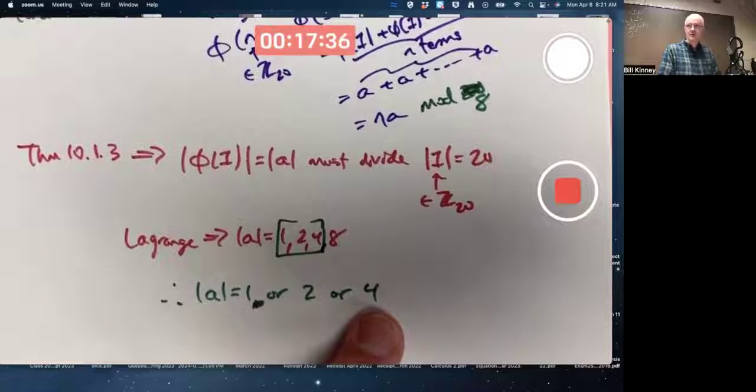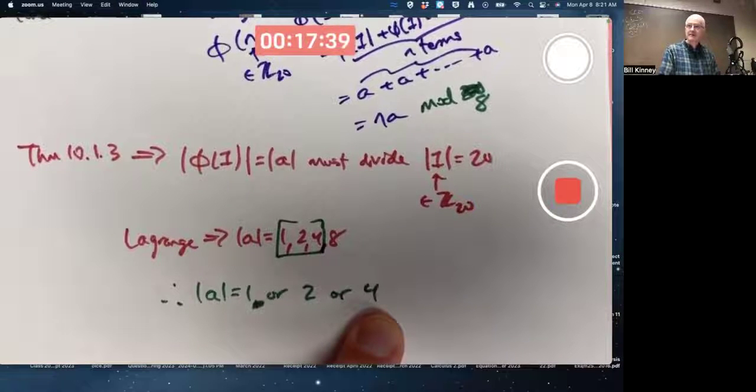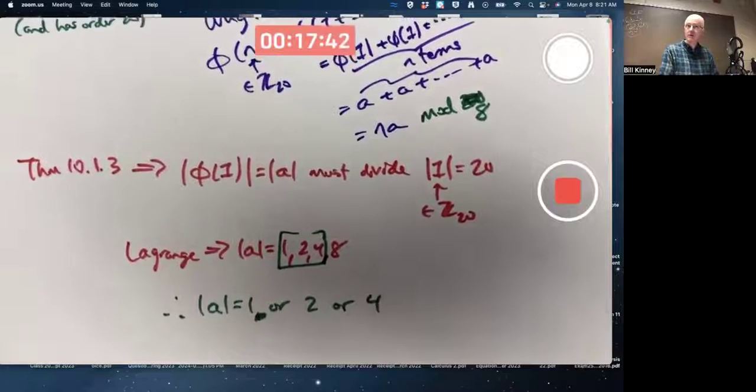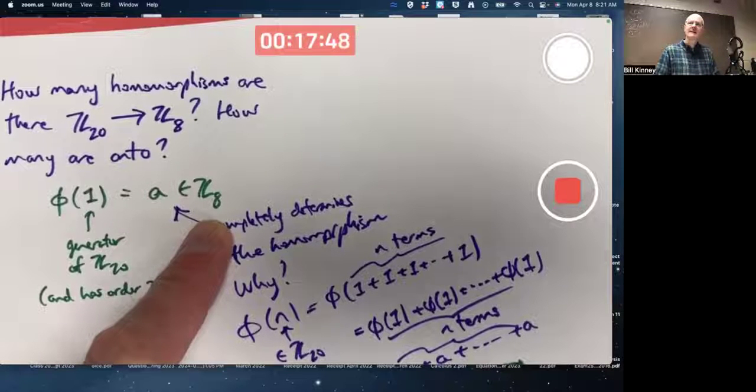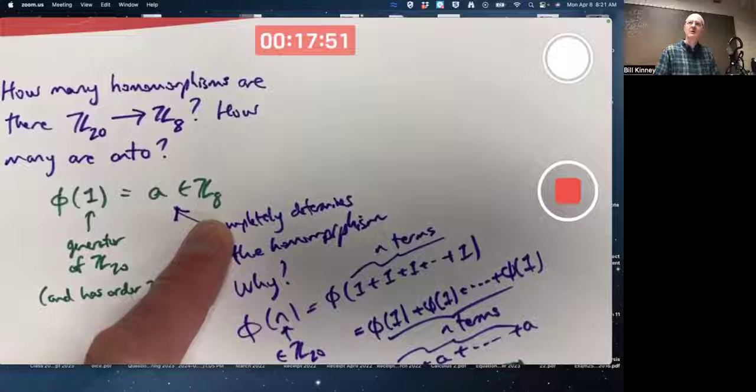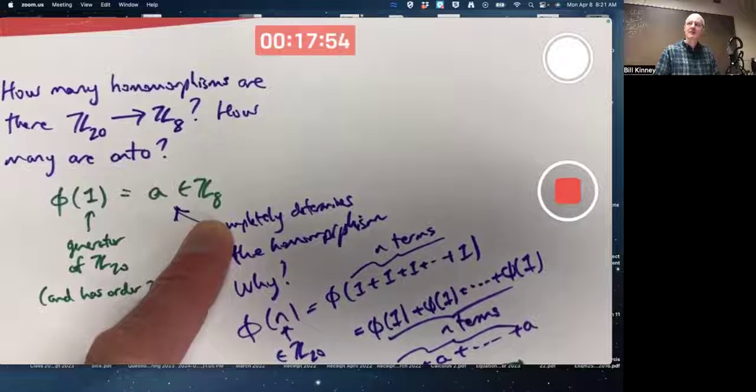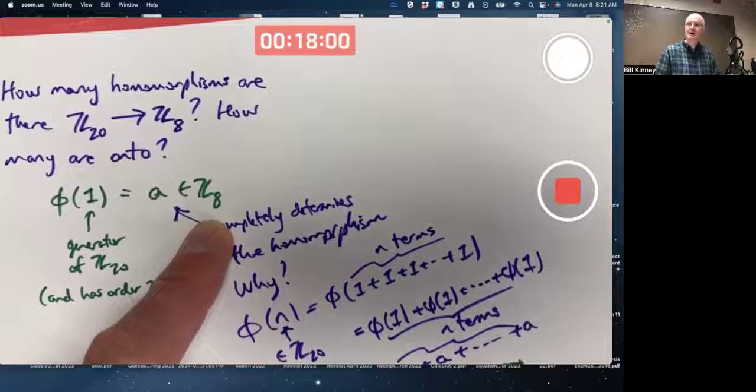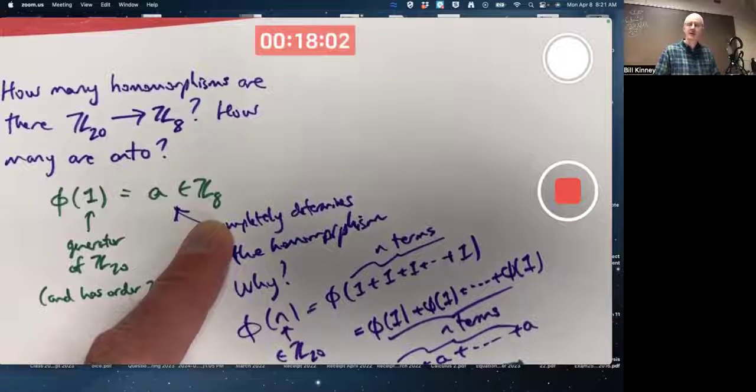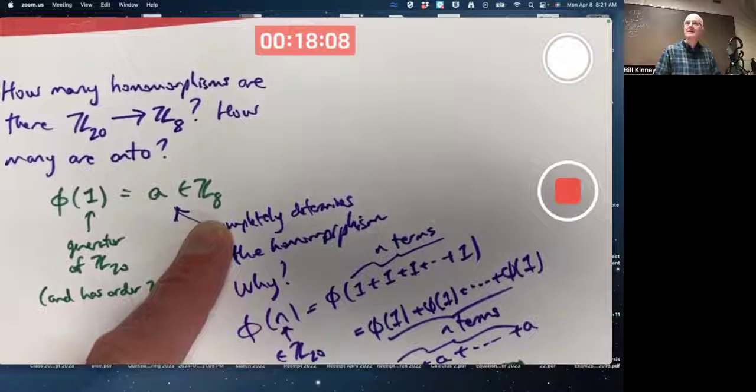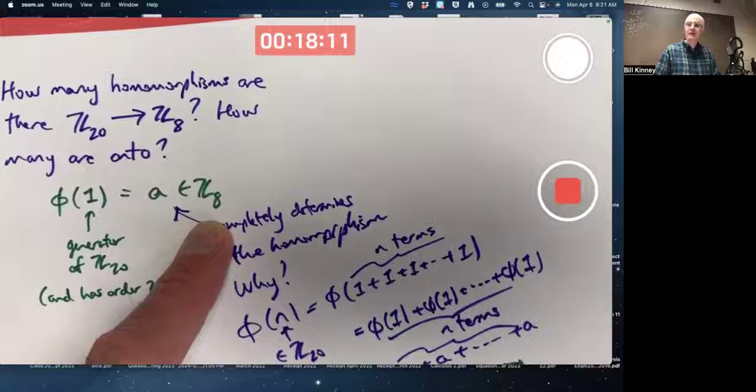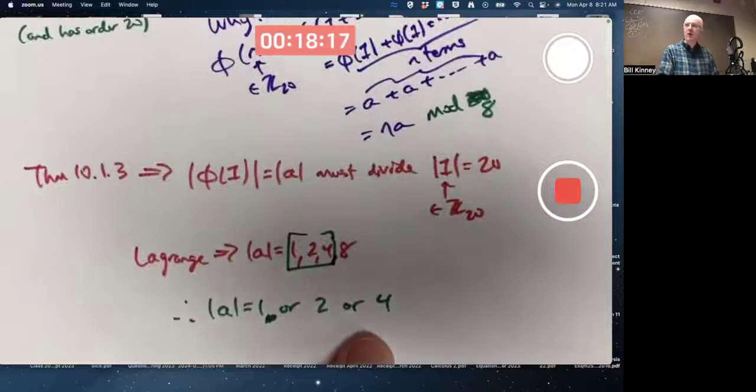If the order of A is four, there's two possibilities because there's two elements in Z8 that have order four. What are they? Two and six. Two has order four. Two plus two plus two plus two is the smallest number of times you add two to itself to get back to zero. Six has order four as well. Six plus six is 12, mod eight is four, not zero. Three sixes gives you 18, mod eight is two, not zero. Six added to itself four terms is 24. Four times is 24. Mod eight is zero.